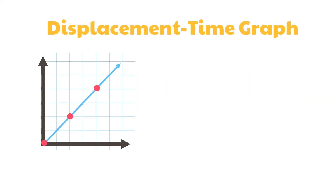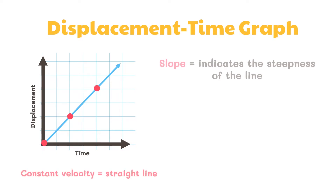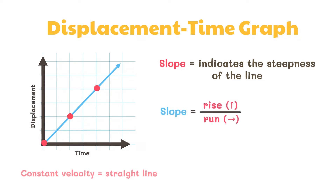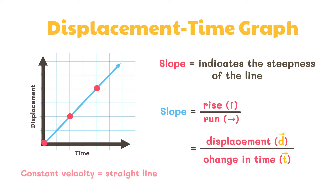Displacement-time graphs show how the displacement of a moving object changes with time. For a body moving at a uniform or constant velocity, the graph is a straight line. The word slope is used to indicate the steepness of the line. The slope of this line is equal to the average velocity of the object — that is, the slope is equal to rise over run, or displacement over time.